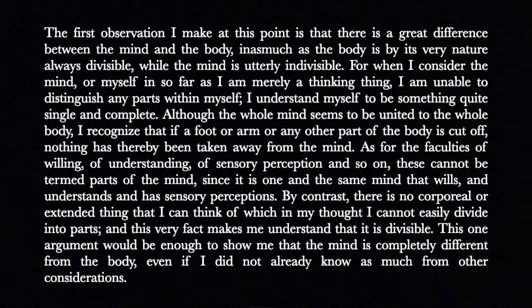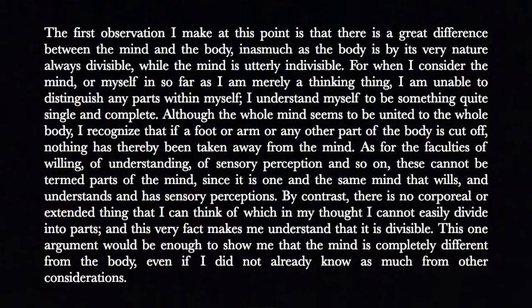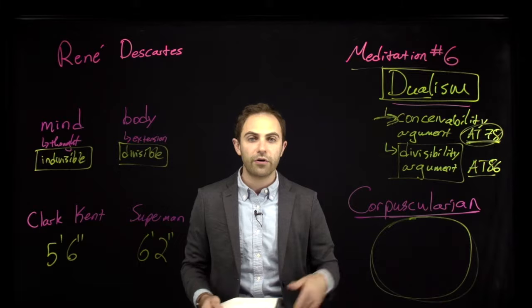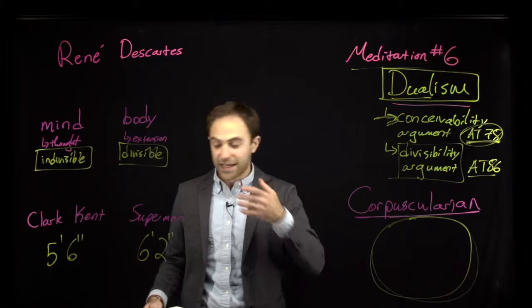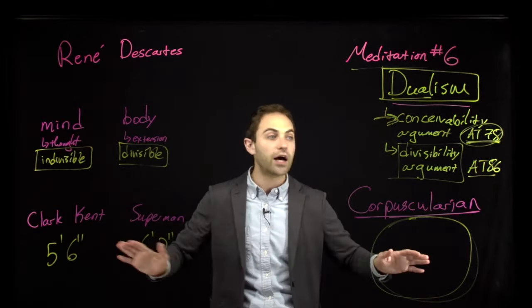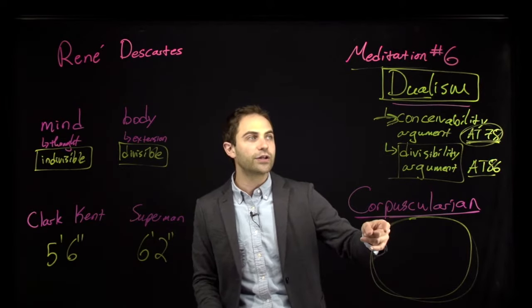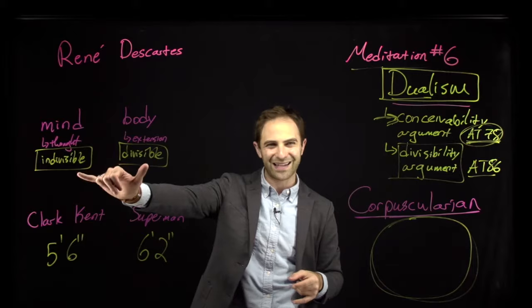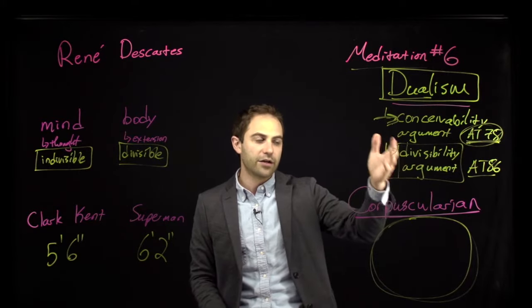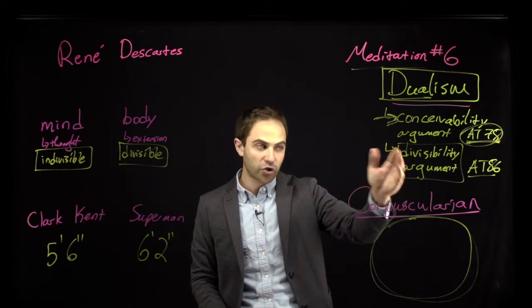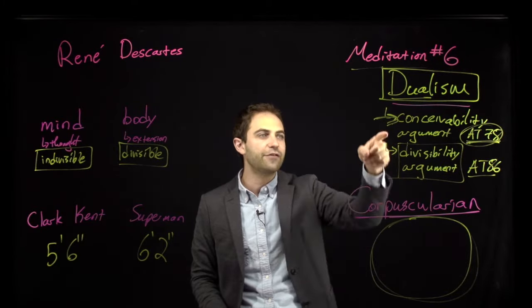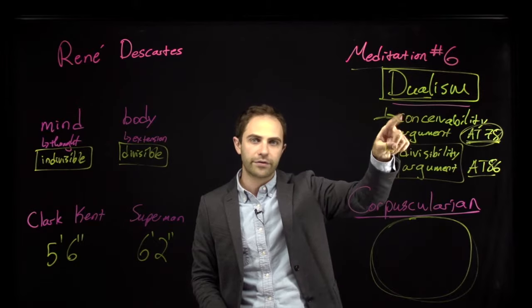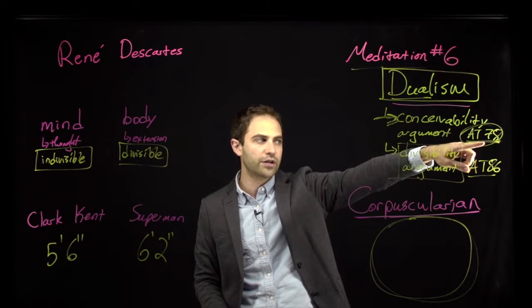'This one argument would be enough to show me that the mind is completely different from the body, even if I did not already know as much from other considerations.' Descartes concludes that dualism is true — the mind is distinct from the body — and the divisibility argument works all on its own, even without the conceivability argument given earlier.